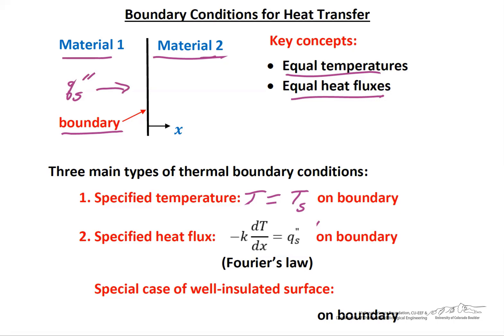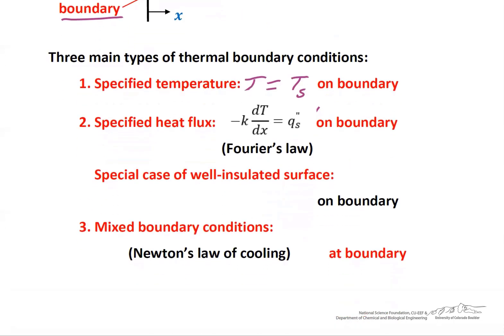There is also a special case called a well-insulated or adiabatic surface, where the heat flux is essentially zero through the wall. That means the temperature derivative would also be zero, giving a flat temperature profile at the wall.